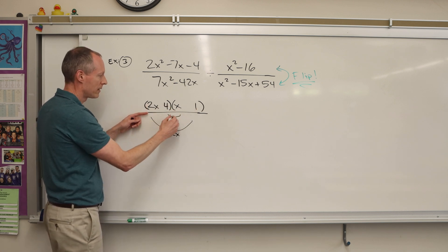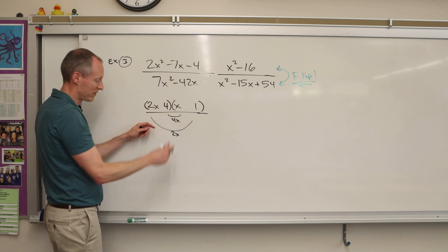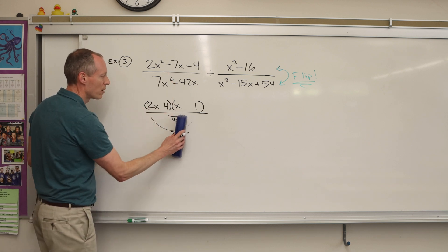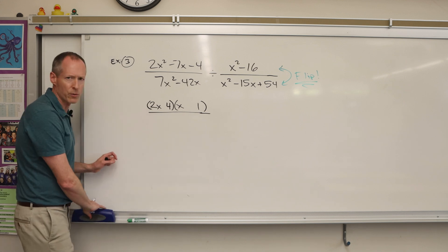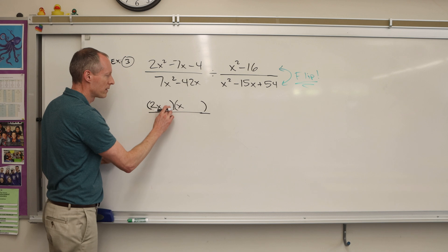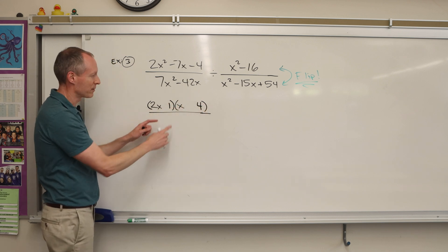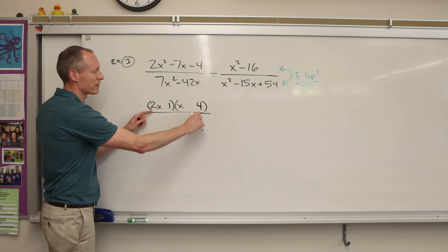But I always tell my students, don't give up on those numbers four and one. Try switching their position because sometimes that makes a big difference because now the two multiplies to the four. Here, I'll show you. So two times four is eight x. And one times x is one x.